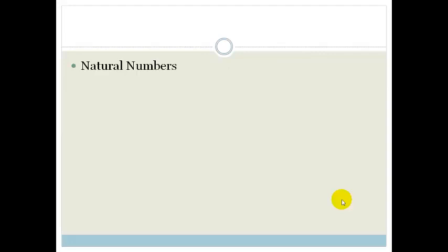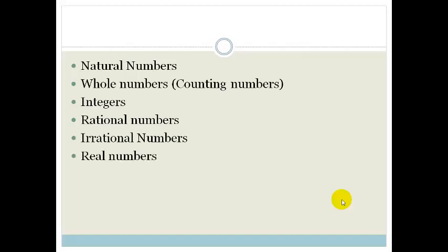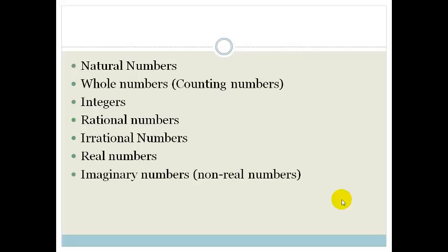Your number system is made up of natural numbers, whole numbers or counting numbers, integers, rational numbers, irrational numbers, real numbers, and imaginary numbers or non-real numbers. It's all very well just knowing that there's all these different numbers out there. I mean, who knew? But you also need to know how they fit into each other.